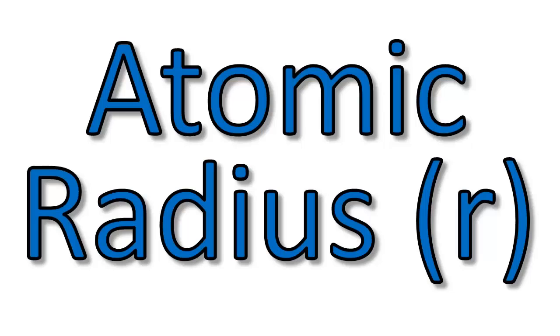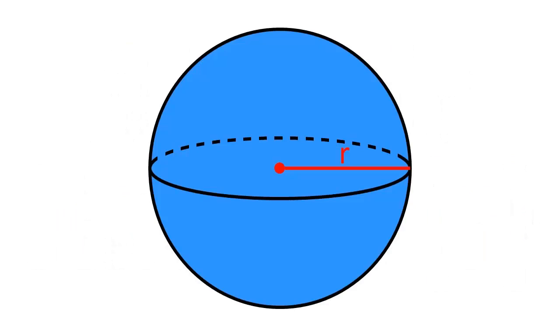Nevertheless, there are some ways to approximate the size of an atom. The size of an atom is generally reported in terms of its atomic radius — the radius of a sphere. Assuming that atoms are spherical is a pretty decent approximation, since the shape of an atom is simply the shape of its orbitals superimposed on top of one another.